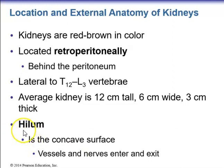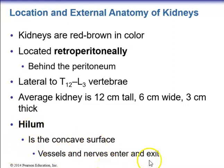The hilum is a structure found in many organs, including the lungs, spleen, and kidneys. It is a concave surface where vessels and nerves will enter and exit the organ. For the kidney, this is where the renal artery and renal vein will enter and exit.